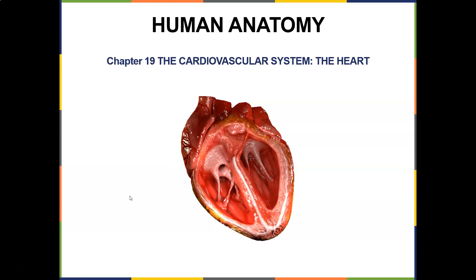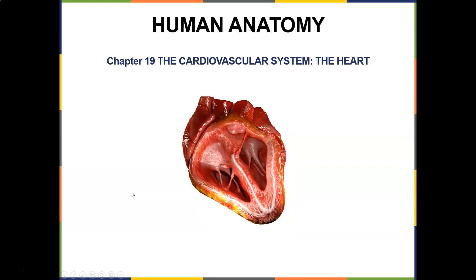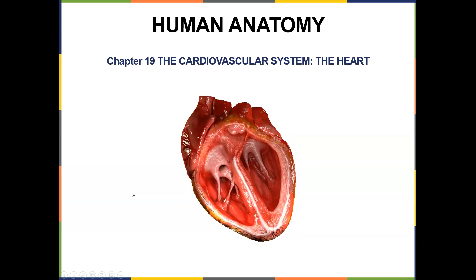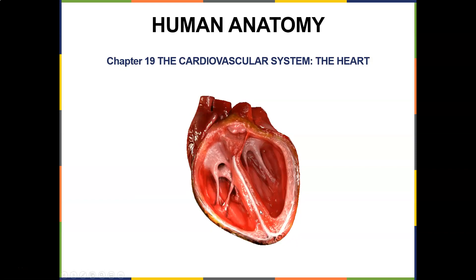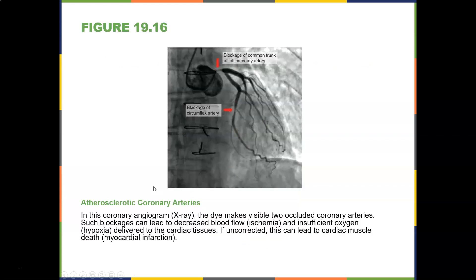Let's continue with the heart and talk about the conduction system. Here's a coronary angiogram X-ray where the dye marks two occluded coronary arteries. Such blockages can lead to decreased blood flow, ischemia, and insufficient oxygen delivery — hypoxia — to the cardiac tissue. If uncorrected, this can lead to cardiac muscle death, which would be a myocardial infarction.